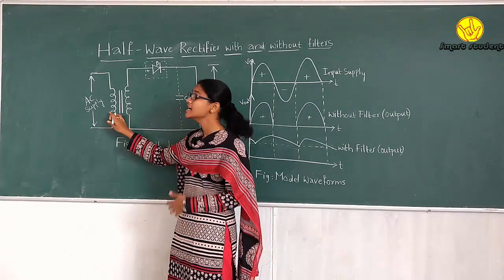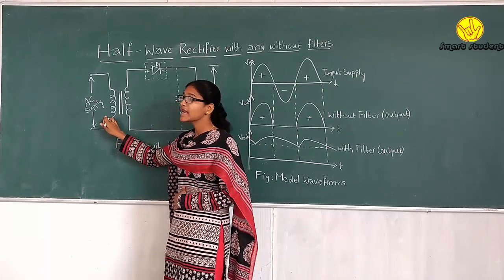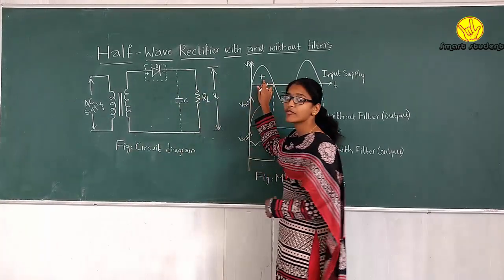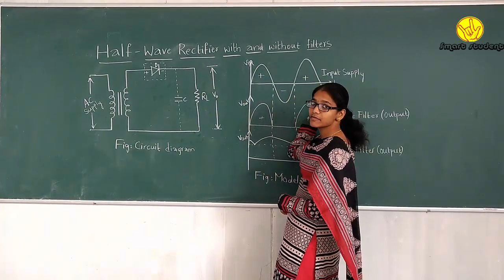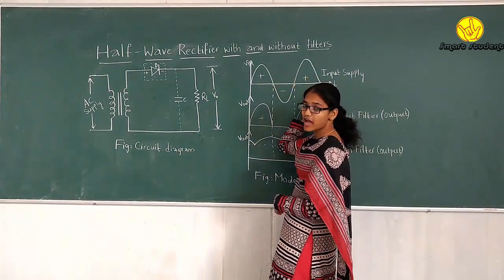The input of a half wave rectifier is an AC supply. AC supply means it consists of positive and negative half cycles, proceeding in the same way: negative, positive, and negative half cycles.